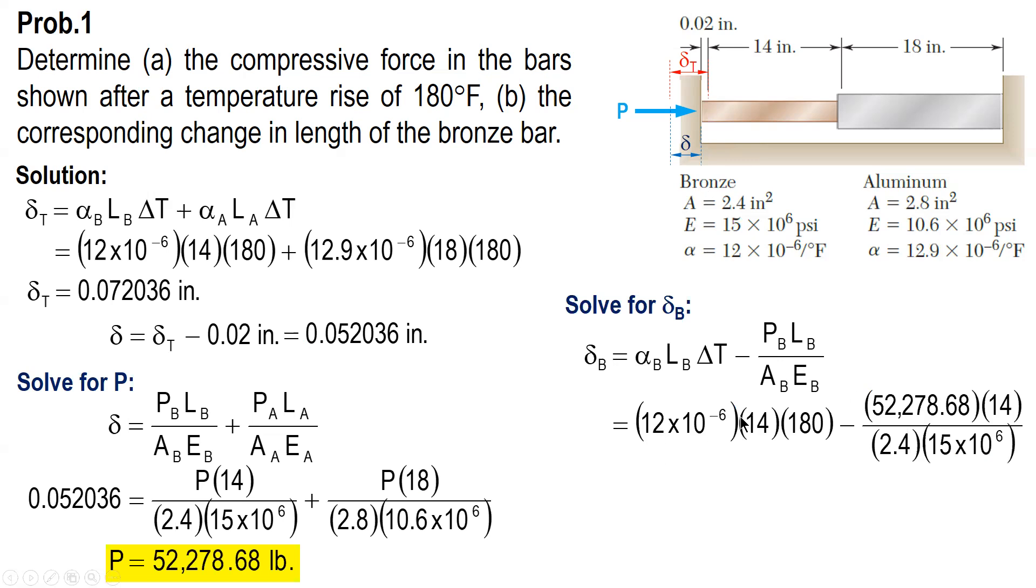Thermal for bronze minus axial for bronze. Thermal deformation and axial deformation. Alpha for bronze, 12 times 10 raised to negative 6, length, change in temperature minus P times length times area times E. The answer is 0.00991 inches.